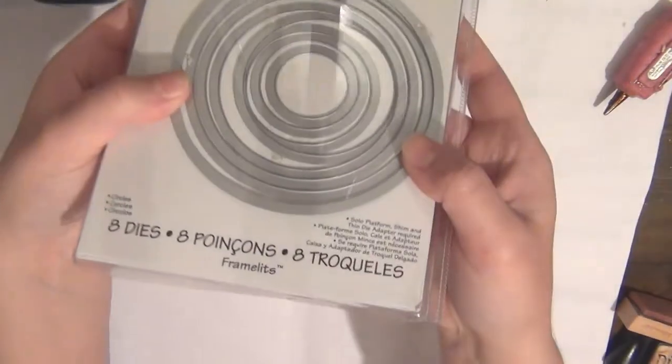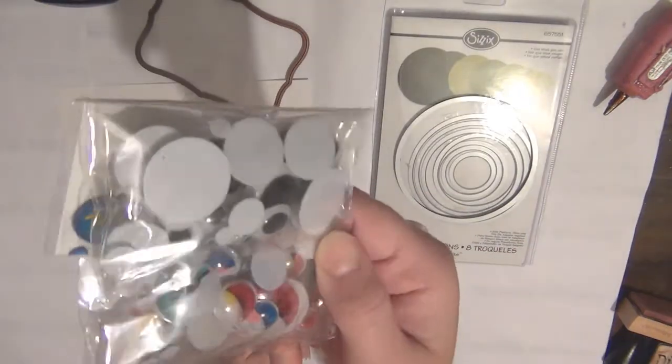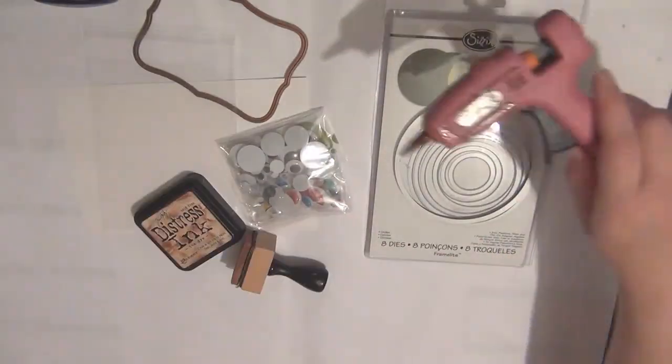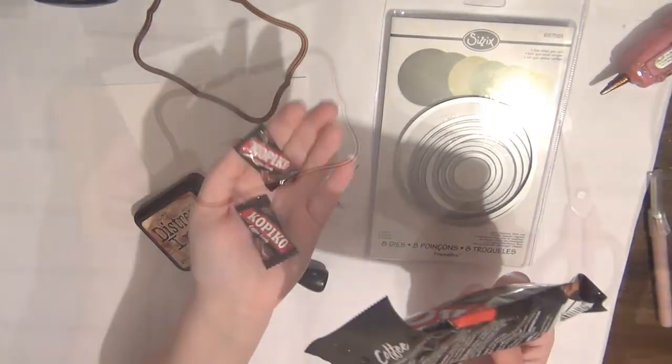I'm going to be showing you an example here with a circle die that I have at the end. I'm also going to be using some googly eyes and some ink for the distressing and a glue gun and some adhesive, and of course you need the treats to go inside the bag.